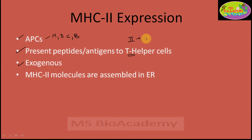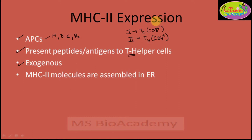In short, class 2 molecules present peptides or antigens to T helper cells, while class 1 presents antigens to Tc cells — the CD8-positive cells. Class 2 presents to CD4-positive cells. This is important to remember because most exam questions come on this: class 1 presents to Tc cells, and class 2 to T helper cells.